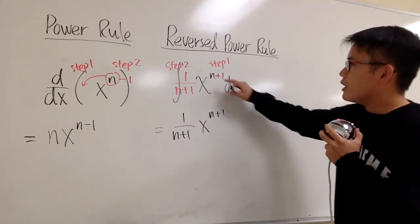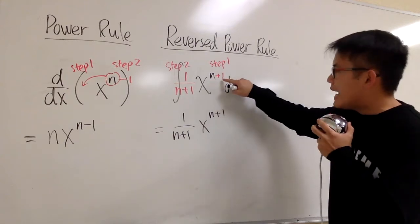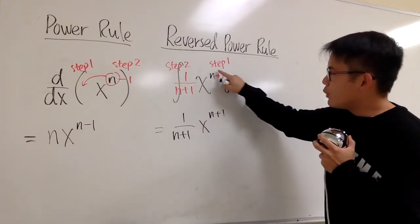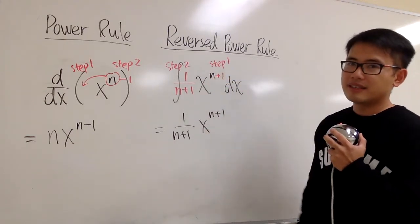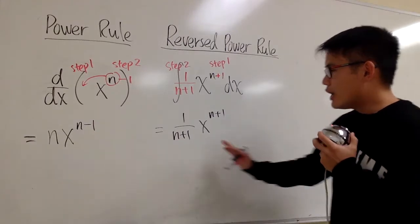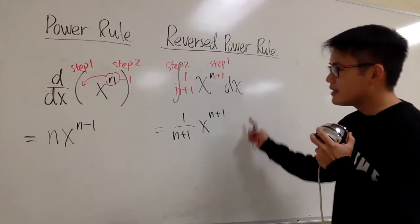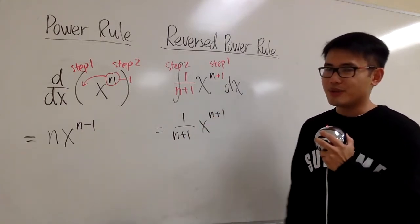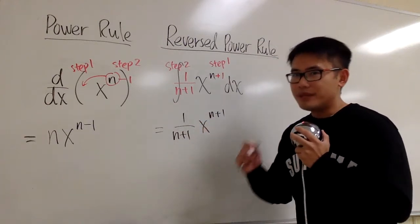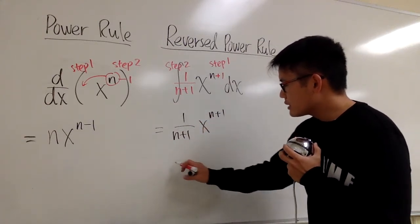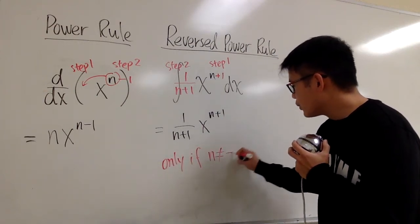Quick review: whenever we are trying to integrate x to a power, step one is to add one to the exponent, giving x to the n plus one. Step two is to divide by that new exponent, n plus one — equivalently multiplying by one over n plus one. However, there is a flaw in this formula: we have to be careful because this only works if n is not equal to negative one, since otherwise we get one over zero in the denominator.